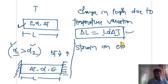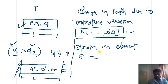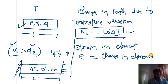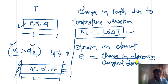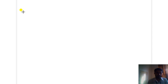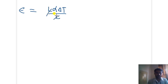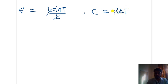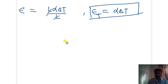If the change in temperature is known and the change in dimension is known, and the original dimension is also known, we can calculate the strain due to temperature variation. Strain on element equals change in dimension divided by original dimension. So the strain will be equal to delta L divided by L. And epsilon will be equal to delta L — that is L × alpha × delta T — divided by L; L will cancel out, and the strain will be equal to alpha × delta T. That is the thermal strain.